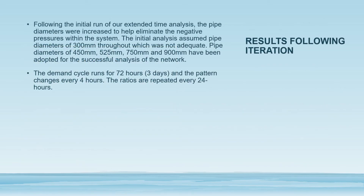Results following iteration: following the initial run of our extended time analysis, the pipe diameters were increased to help eliminate the negative pressures within the system. The initial analysis assumed pipe diameters of 300 mm throughout, which was not adequate. Pipe diameters of 450, 525 mm, 750 mm, and 900 mm have been adopted for a successful analysis of the network. The demand cycle runs for 72 hours — three days — and the pattern changes every four hours, with ratios repeated every four hours.